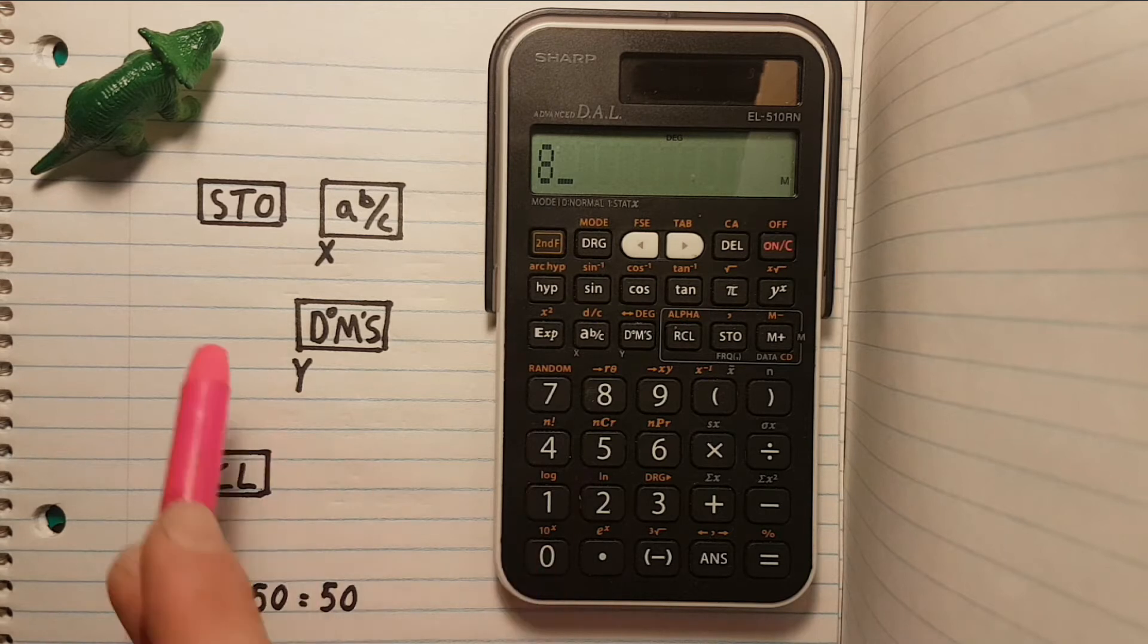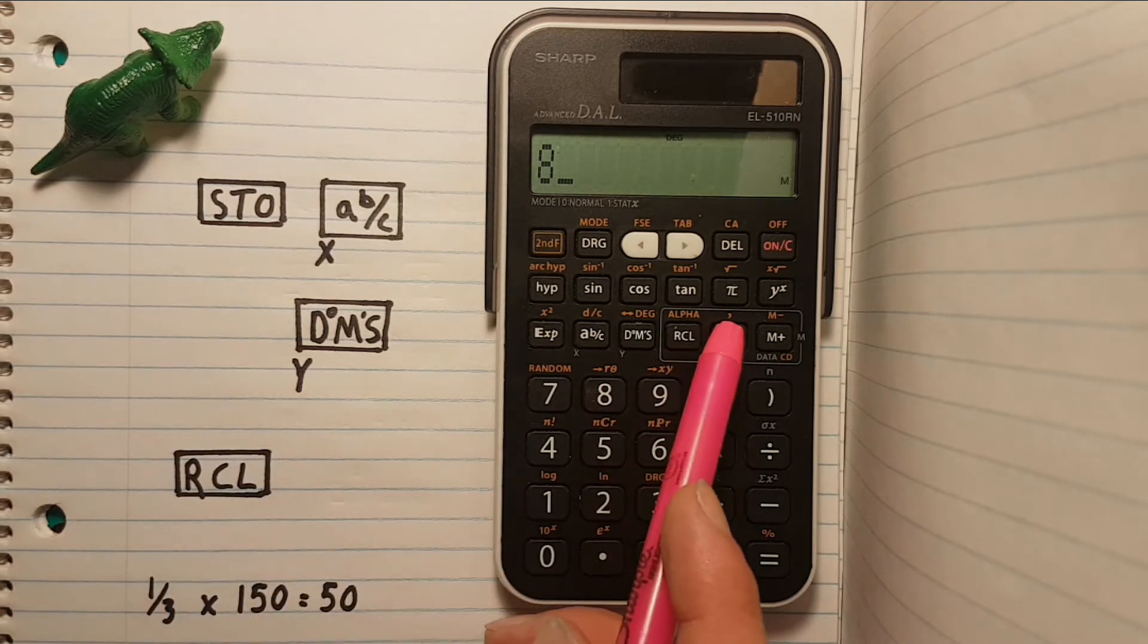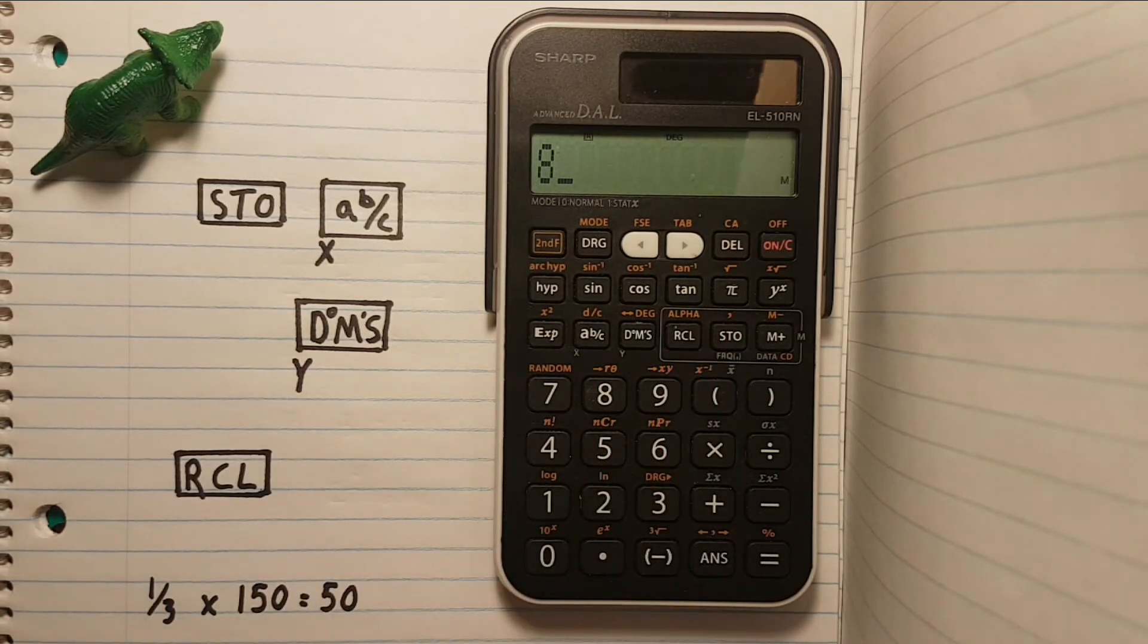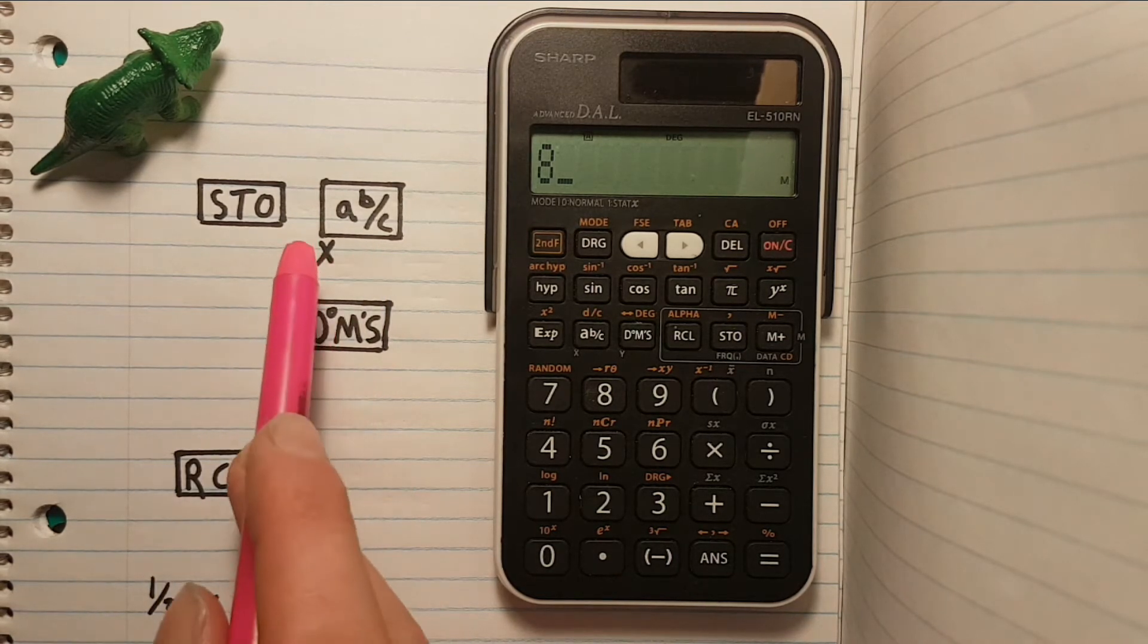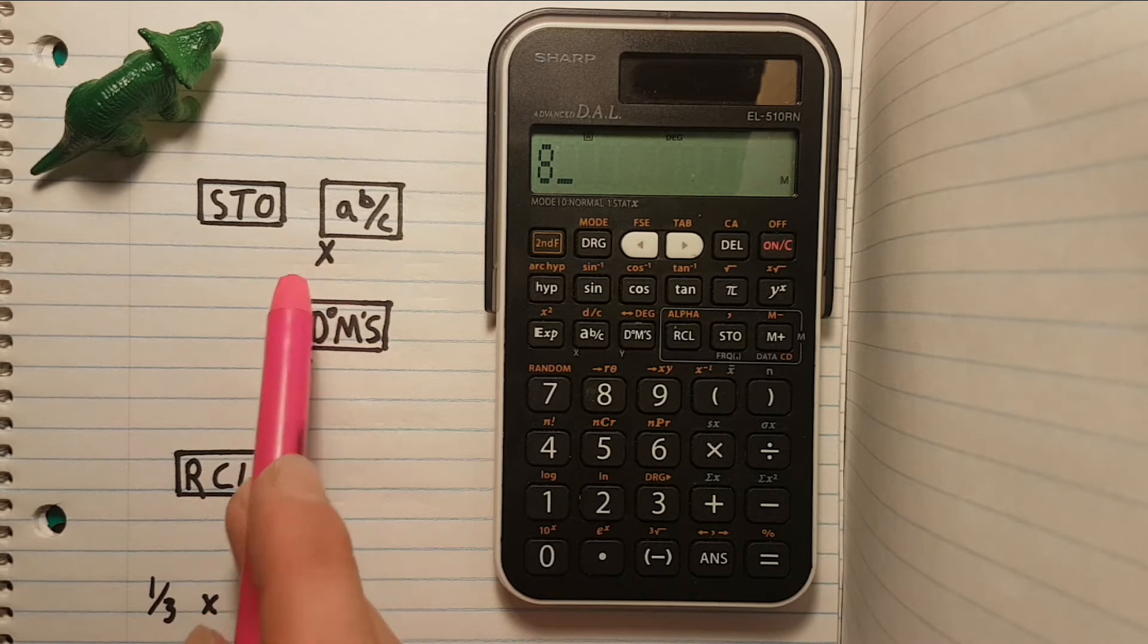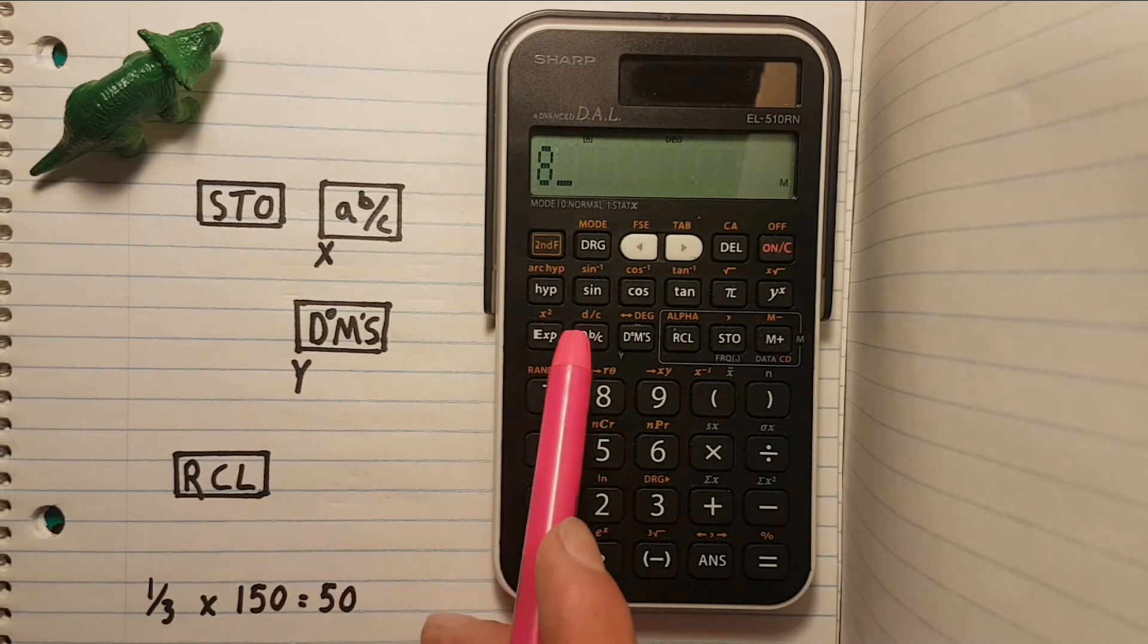Now press the STO key and then the ABC or DMS keys which store that number as the variable X or variable Y. We'll use ABC.